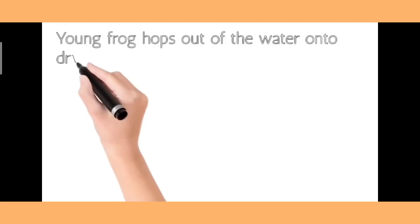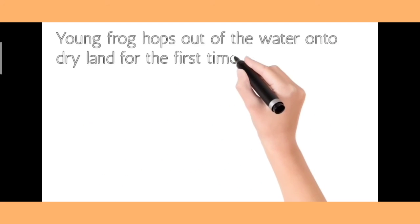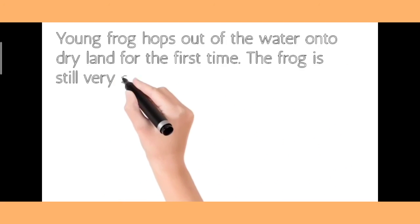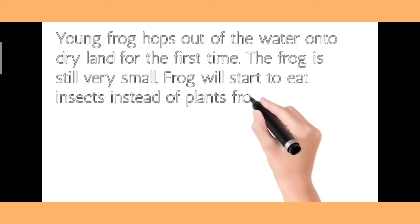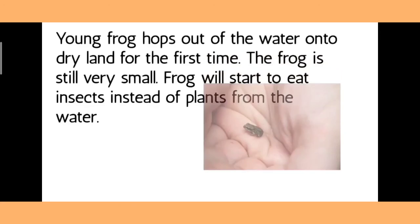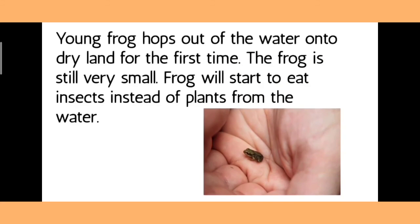The young frog hops out of the water onto dry land for the first time. The frog is still very small. The frog will start to eat insects instead of plants from the water.